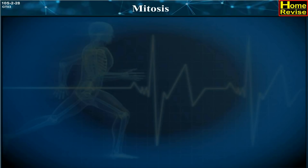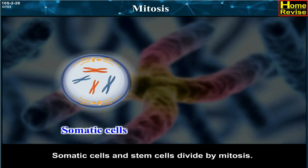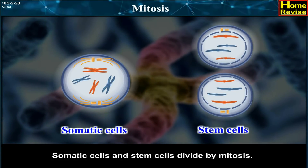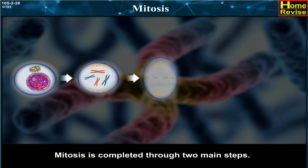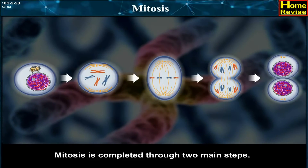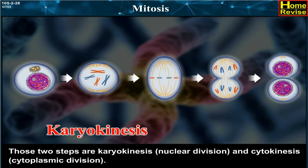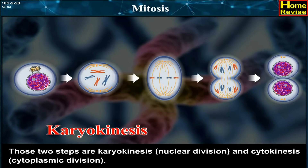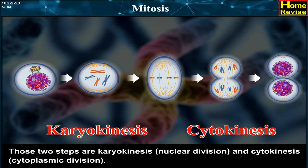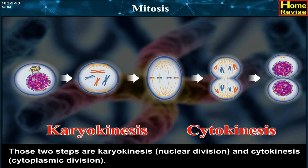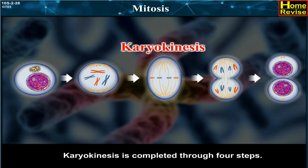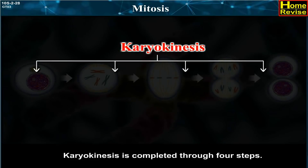Somatic cells and stem cells divide by mitosis. Mitosis is completed through two main steps: karyokinesis, that is nuclear division, and cytokinesis, that is cytoplasmic division. Karyokinesis is completed through four steps: Prophase, Metaphase, Anaphase, and Telophase.